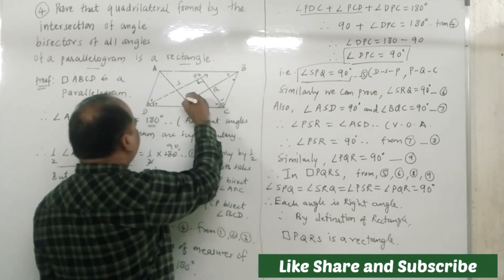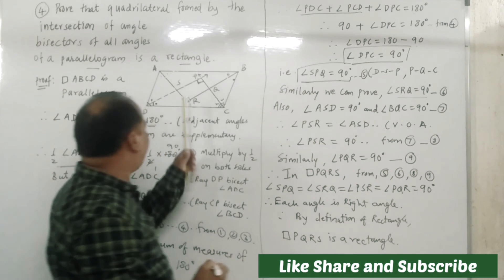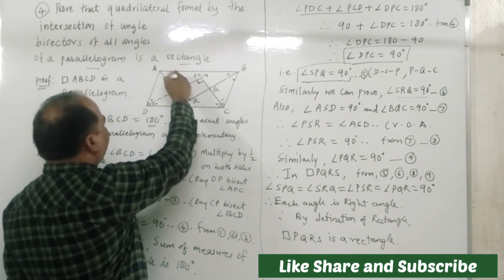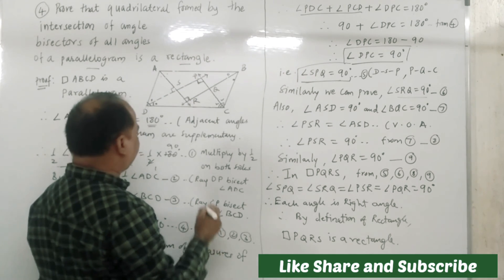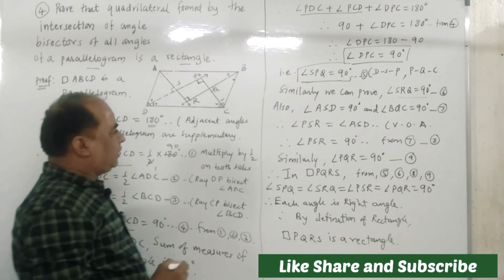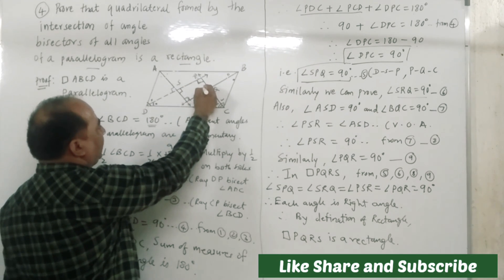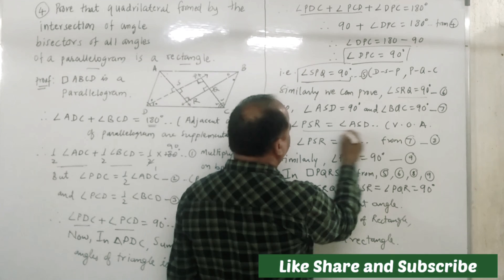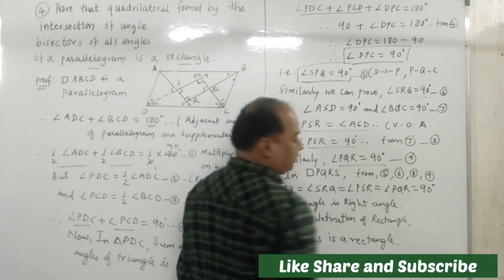Similarly, we can prove that angle SRQ is also 90 degrees. In the same manner, we can prove that angle ASD and angle BQC are also 90 degrees. Since vertically opposite angles apply, angle SPQ is 90 degrees, and similarly we can prove that angle TQR is also 90 degrees.